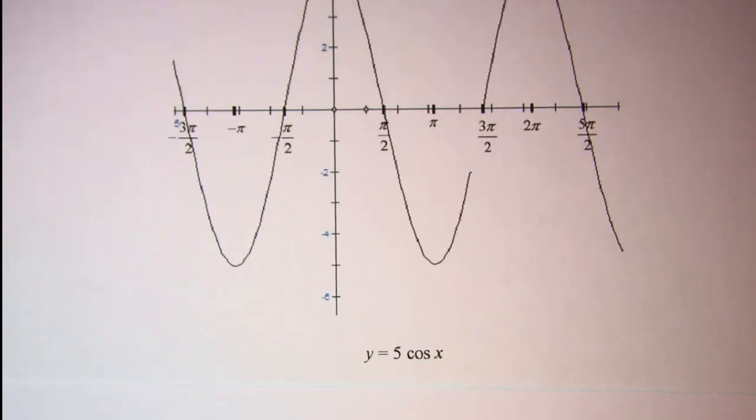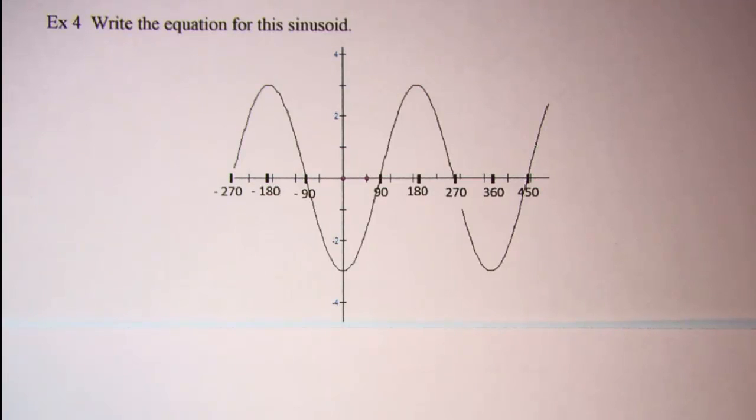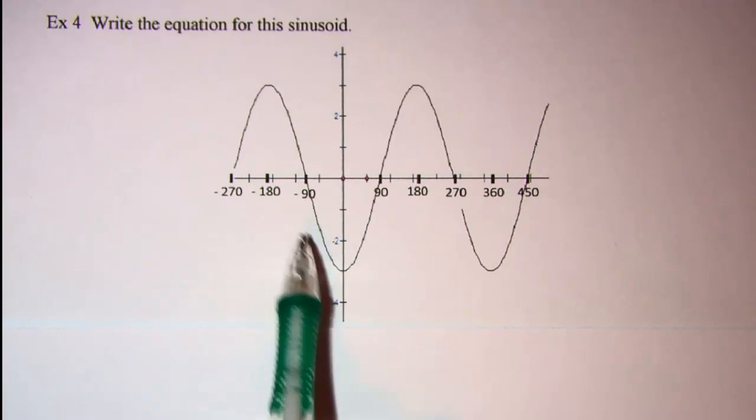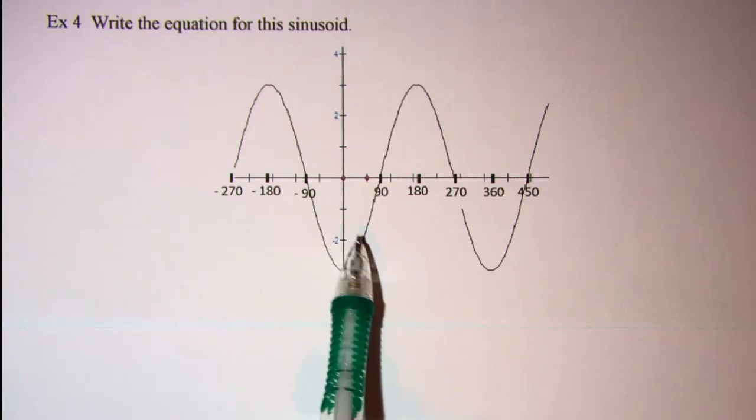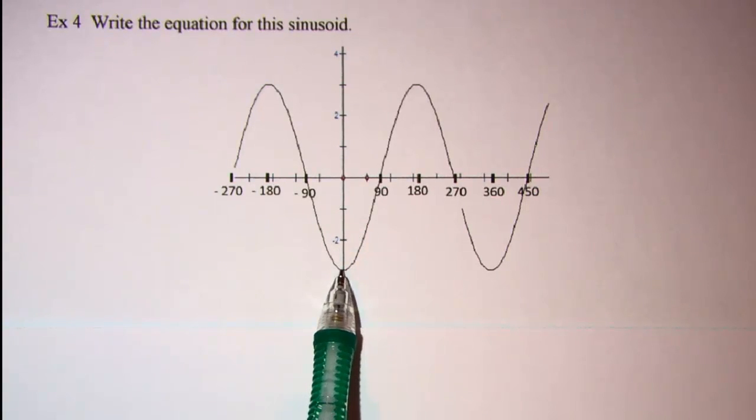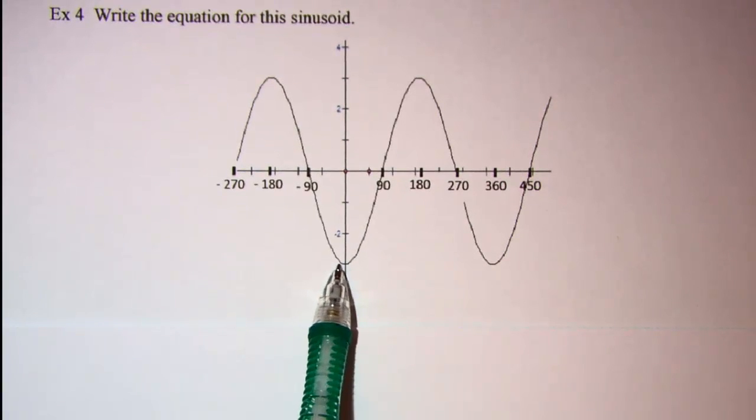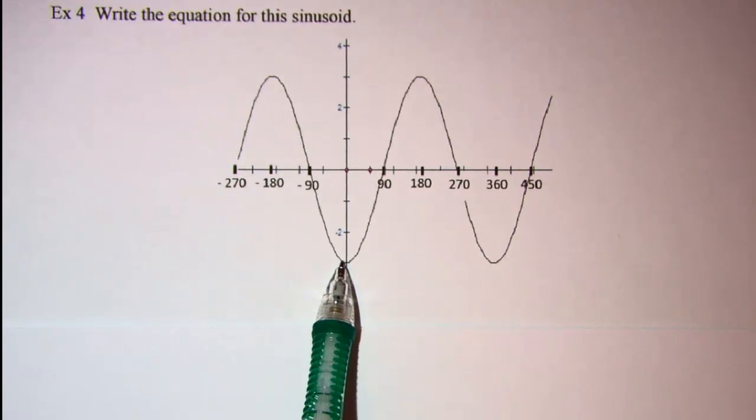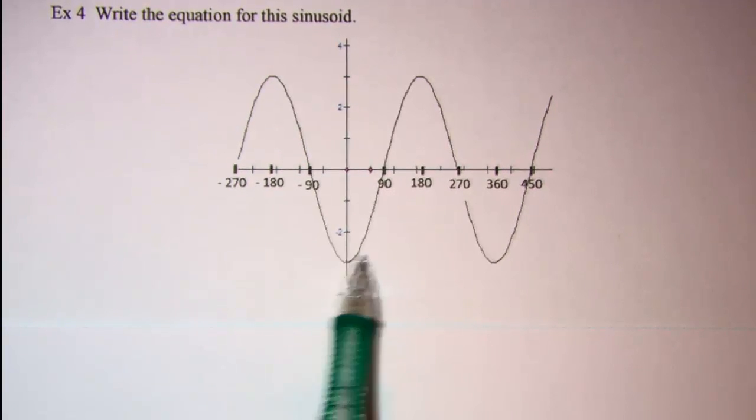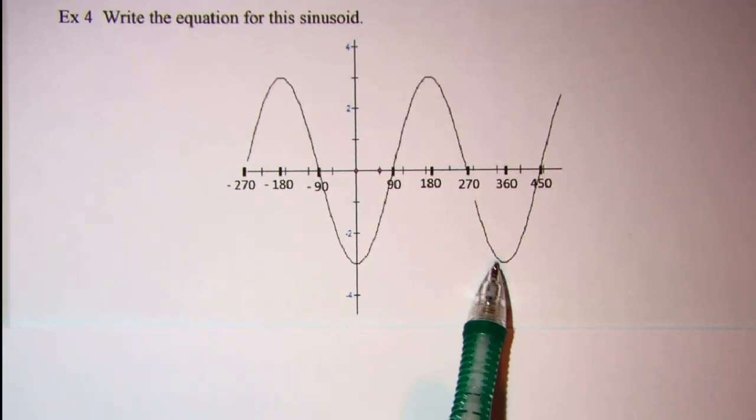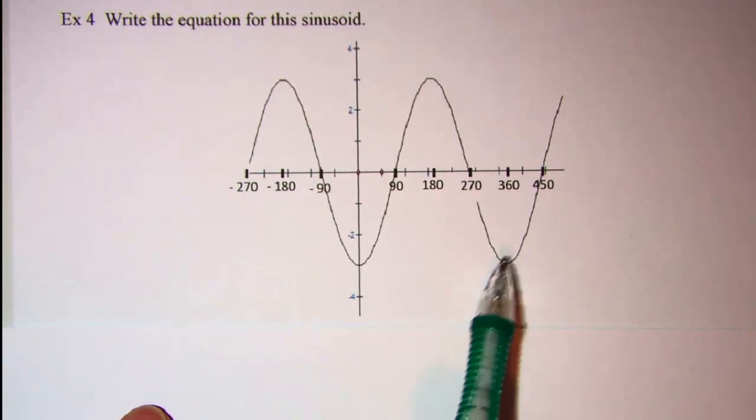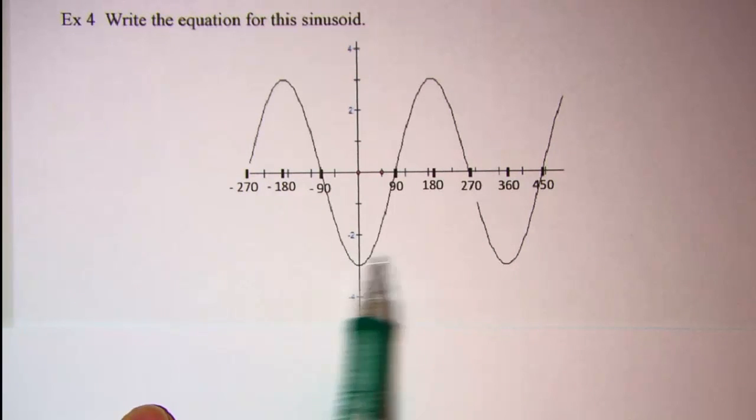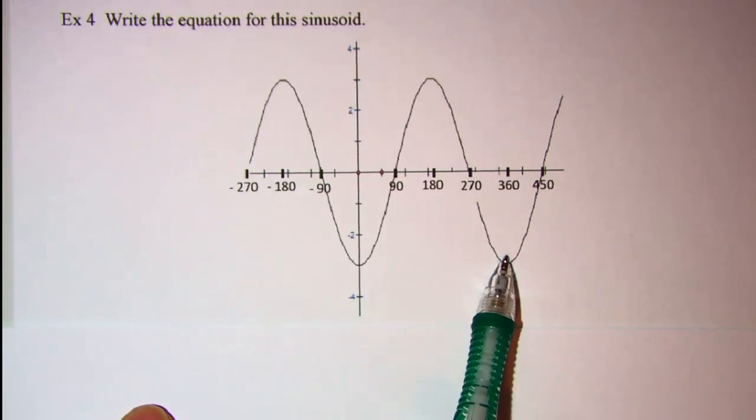Our next example we have a sinusoid that hits a minimum on the y-axis. So that means we have a negative a value for the coefficient of cosine, and it hits the negative again at 360 degrees. So again we've not stretched it horizontally any.